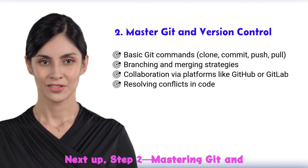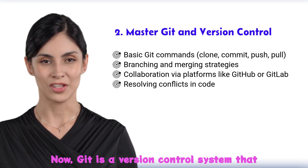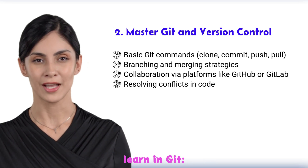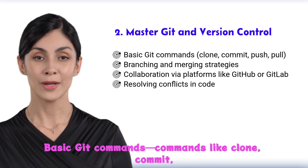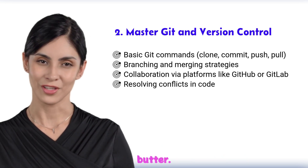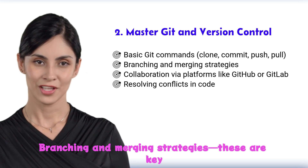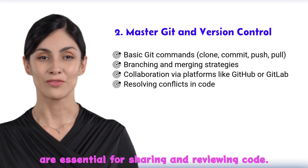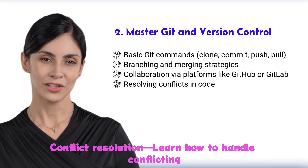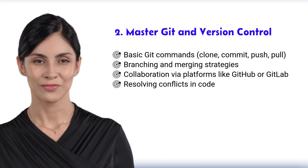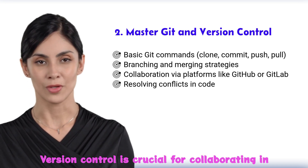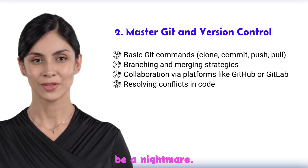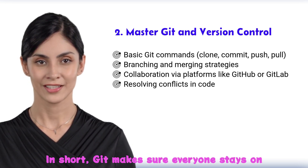Step 2: mastering Git and version control. Git is a version control system that tracks changes in code and makes collaboration super easy. You need to learn basic Git commands like clone, commit, push, and pull. Branching and merging strategies are key for managing parallel work in teams. Platforms like GitHub or GitLab are essential for sharing and reviewing code. You also need to learn conflict resolution — how to handle conflicting changes. Without Git, teamwork and tracking changes would be a nightmare.